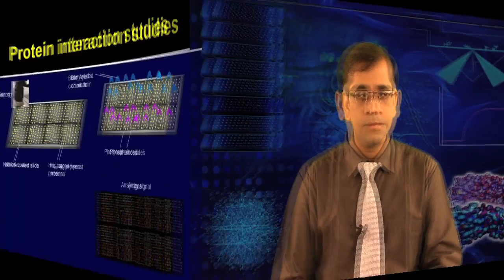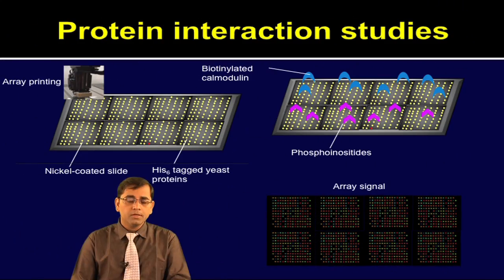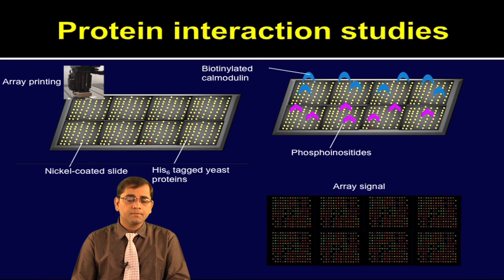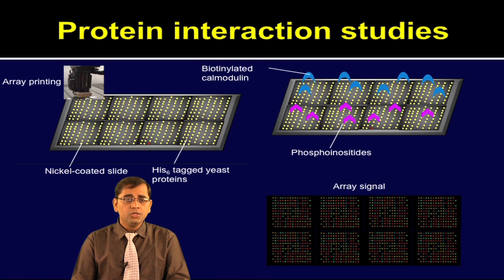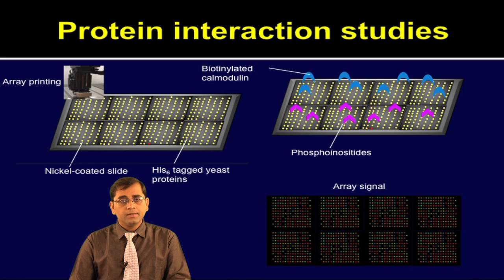Let us now discuss case study 2: analysis of yeast protein activities using proteome chips. In this study, Zhu et al cloned 5800 open reading frames from yeast, overexpressed and purified these proteins to build the yeast proteome microarrays. Yeast proteome microarrays were built after each of these clones were expressed and purified, then further printed on the chip, and then used to screen the interaction of proteins with proteins and phospholipids. This study revealed that there are many new calmodulin and phospholipid interacting proteins.